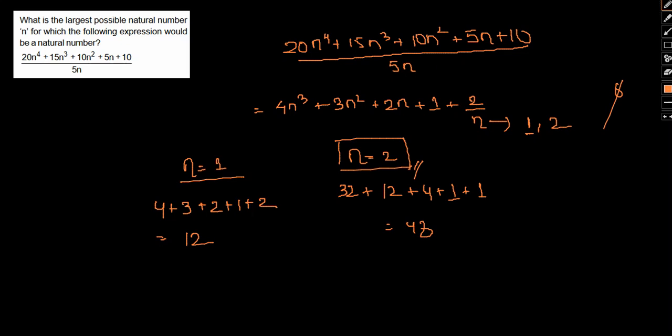Pretty straightforward kind of a question. So all we have to do is simply determine the value of n. So n equal to 2 will be the largest possible value in this regard. Any value more than n we won't have a natural number because it has to be completely divisible by 2.